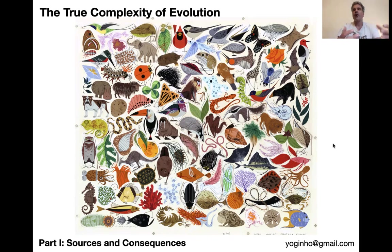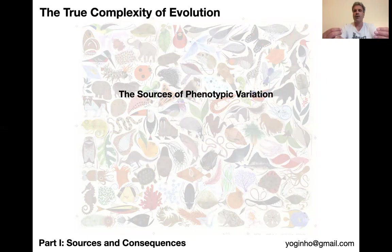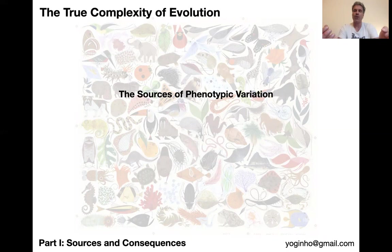Now we're going to shift focus from inside the organism to outside. What are the consequences of these processes — the organization of the organism, its agency — on evolutionary theory? In this first module, we're going to dive right in by looking beyond the core of evolutionary theory, evolution by natural selection, and look at aspects of evolutionary theory that are often not counted as within this core but are absolutely essential for understanding evolutionary processes.